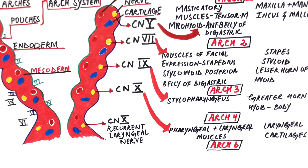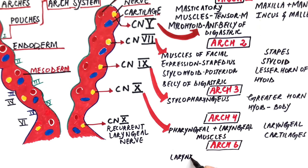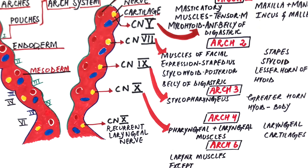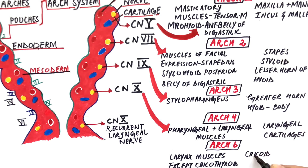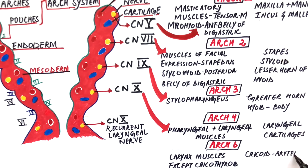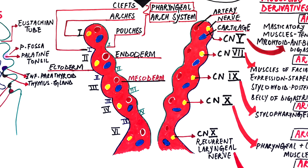The muscular derivatives of the sixth arch are the same as the fourth arch, with the exception of the cricothyroid muscle. Its cartilaginous derivatives are the cricoid, arytenoid and corniculate cartilages. The muscles of the sixth arch will be innervated by the recurrent laryngeal nerve, a branch of the vagus nerve.